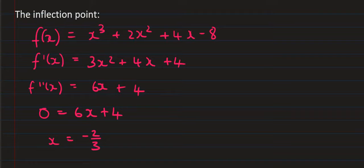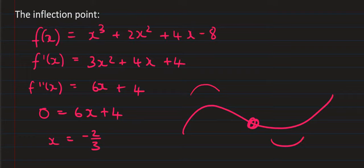So at x equals negative 2 over 3, there is an inflection point — a point where the graph switches from concave down to concave up, or from concave up to concave down, which would look like that. Both of these are inflection points.